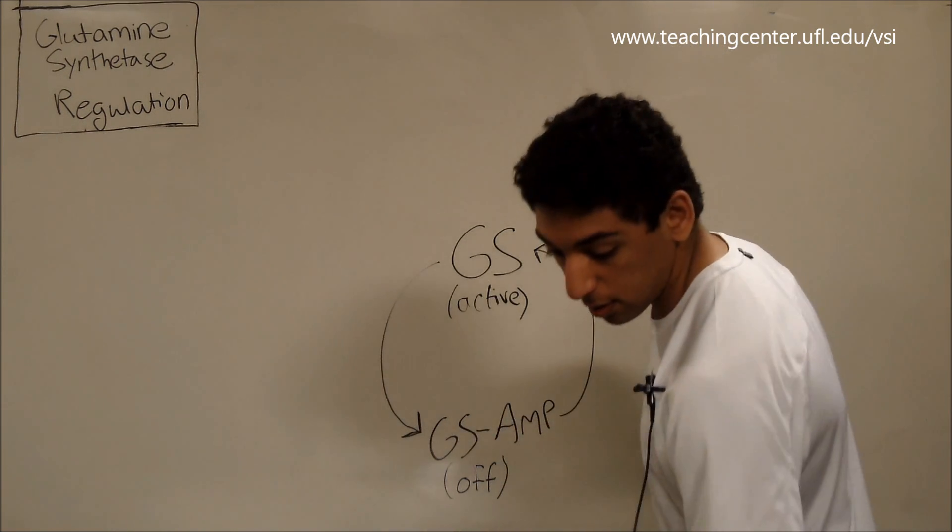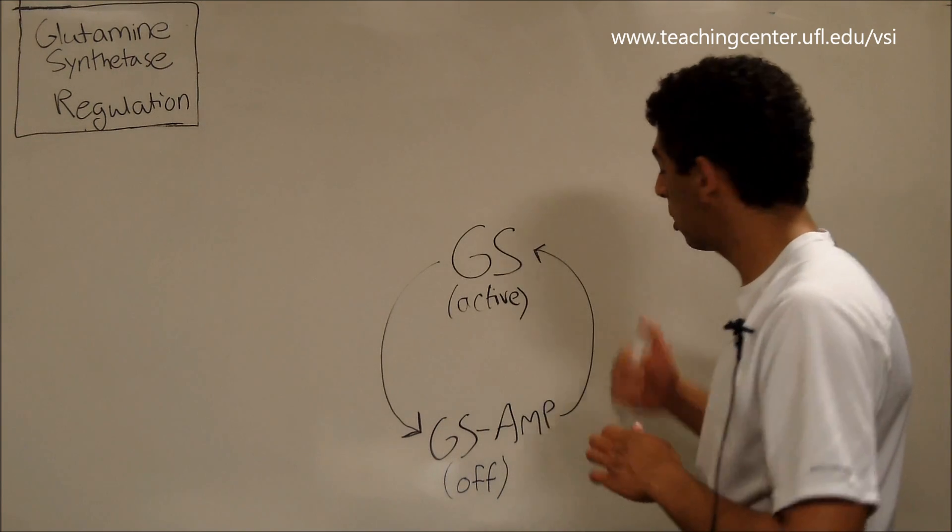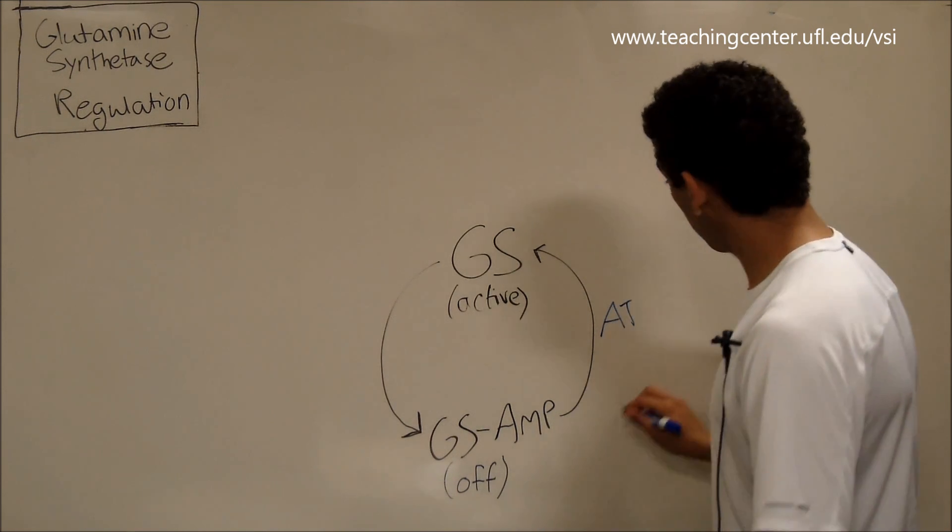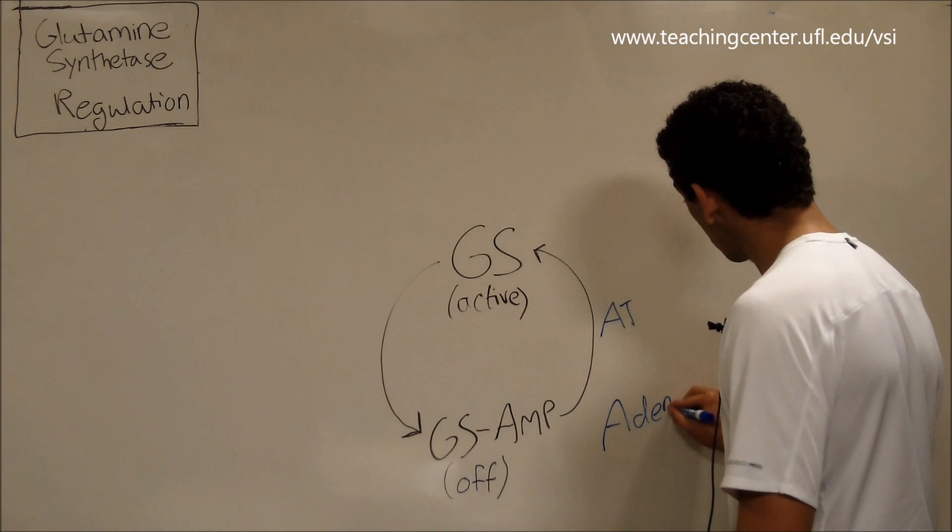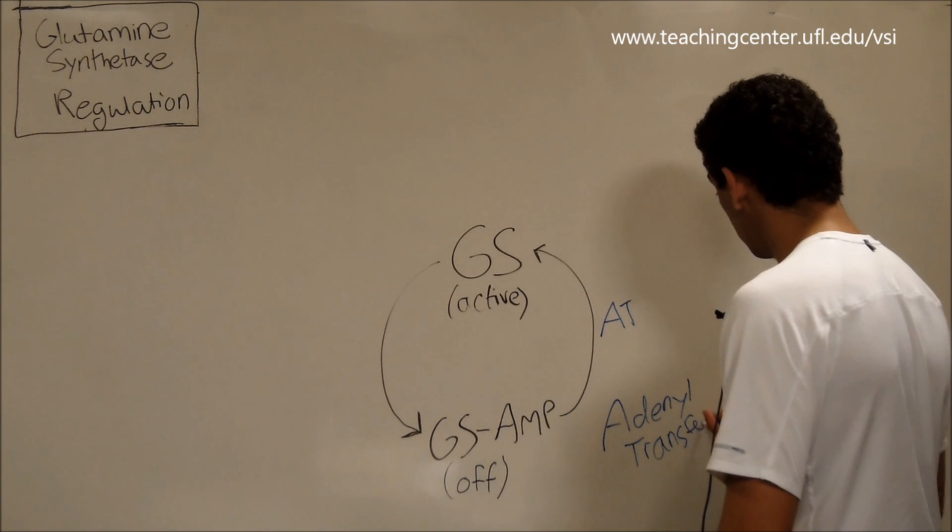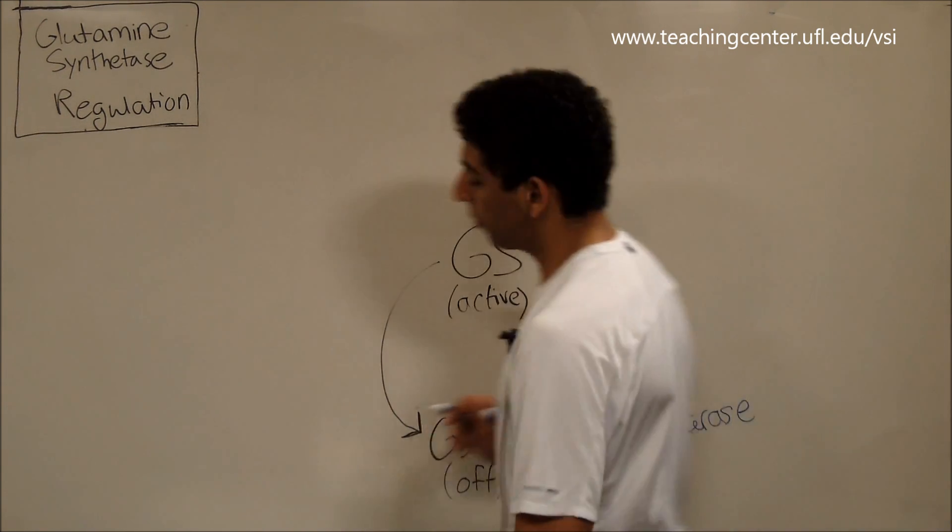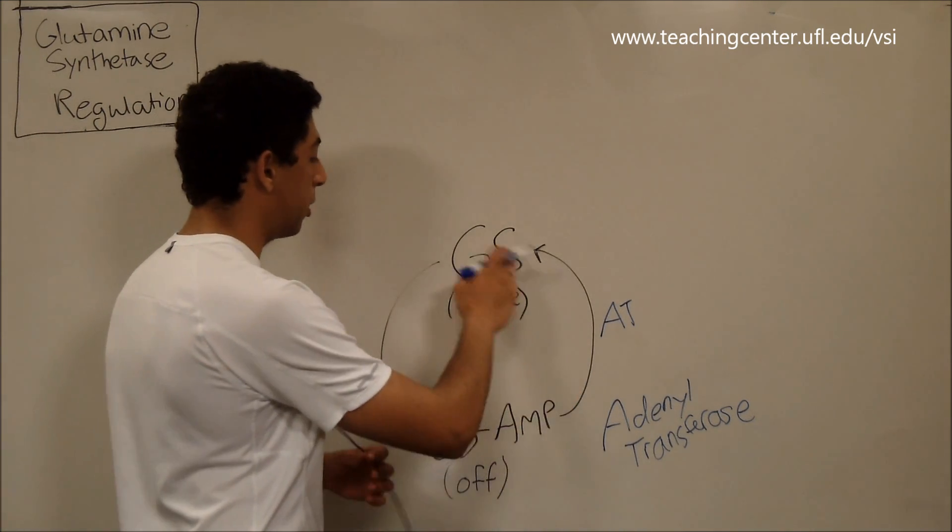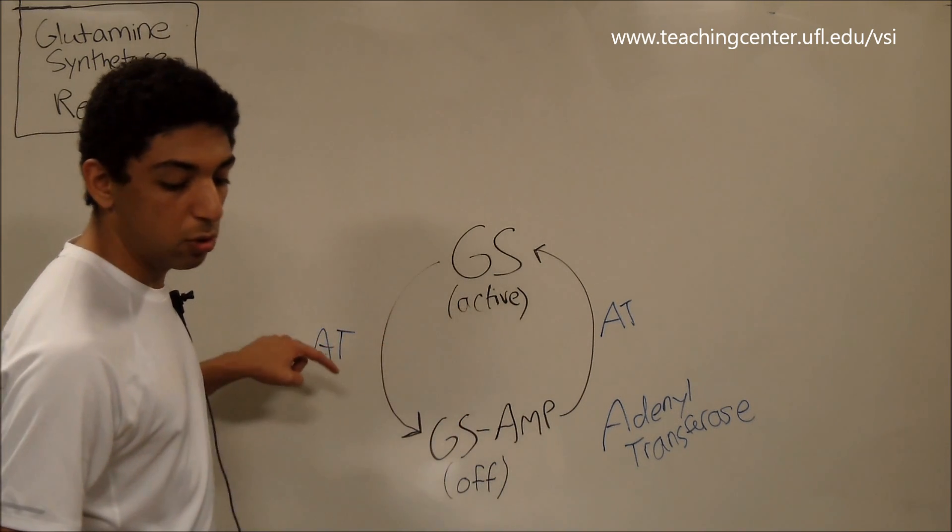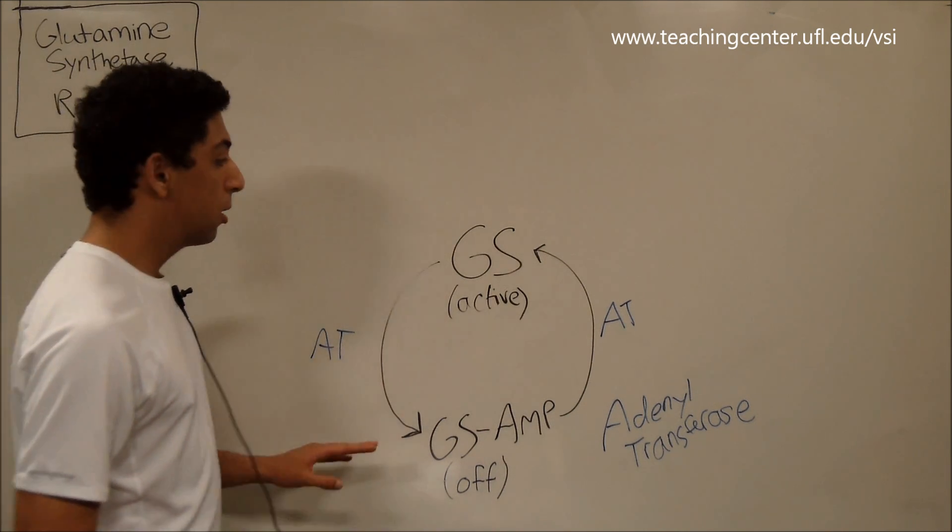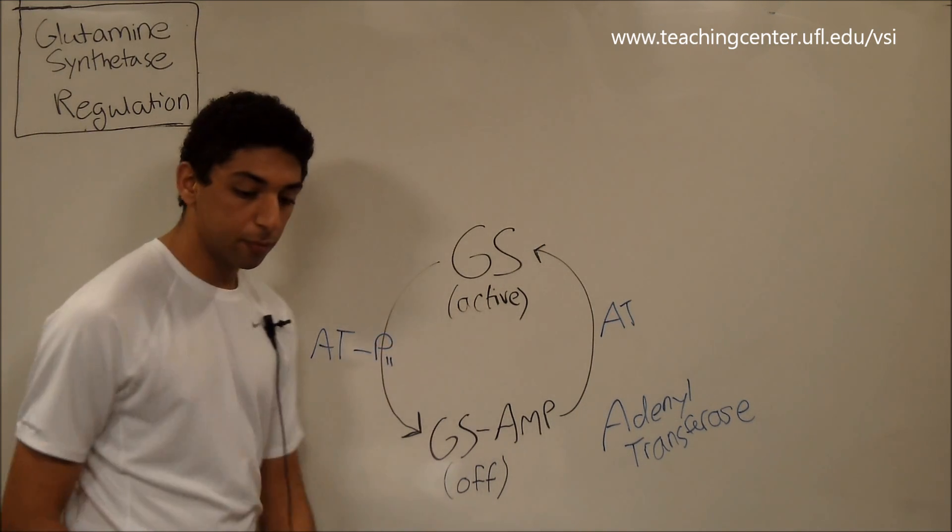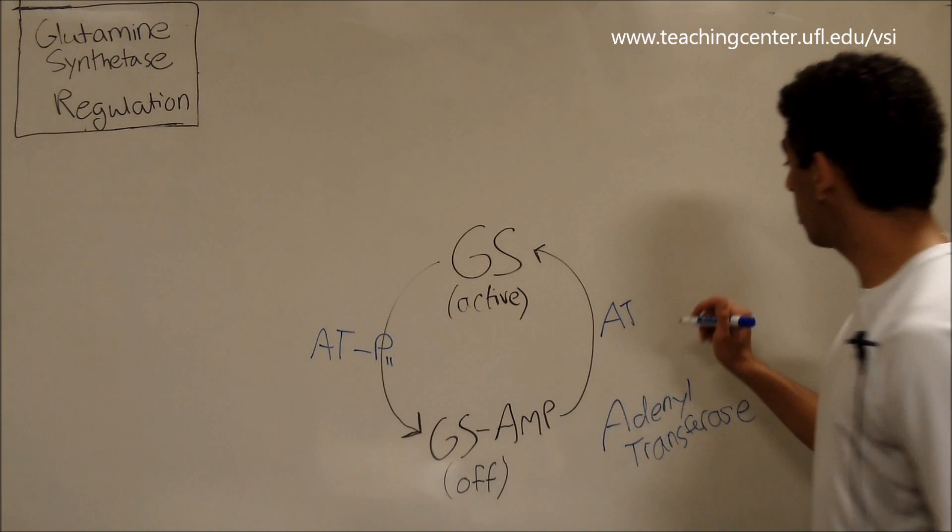And the enzyme that switches between the on and off forms is called adenyl transferase. I'll write that down right here. It's adenyl transferase. And both different, like both turning it on and turning it off use adenyl transferase. The difference is what's attached to the adenyl transferase. So both sides, on both sides, adenyl transferase has a regulatory protein on it called P2. So both sides, up until now, they're the same.